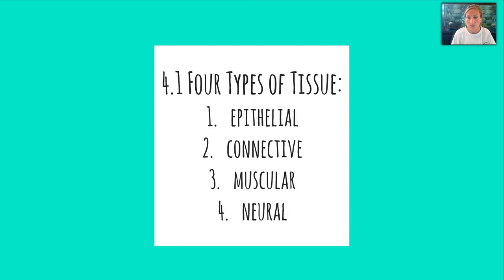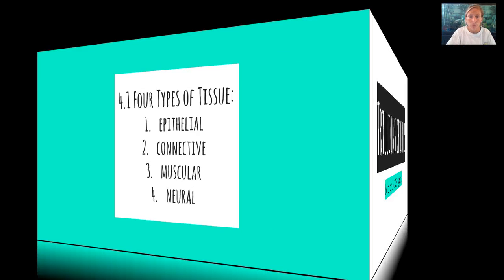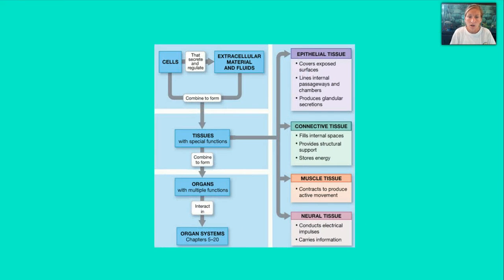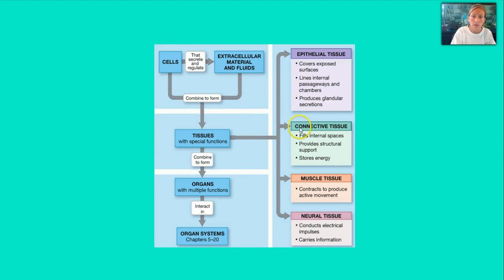We're going to talk about four types of tissues today: epithelial, connective, muscular, and neural, and we're going to break each one down. It's important to note that our body is made up of trillions of cells, but there are actually only 200 cell types that make up those different tissues. Our focus today is to remember that the levels of organization start with cells, and those cells form the tissues we'll talk about today. Eventually, those tissues combine to form organs and then larger organ systems, so we'll get broad general information about each tissue type first.